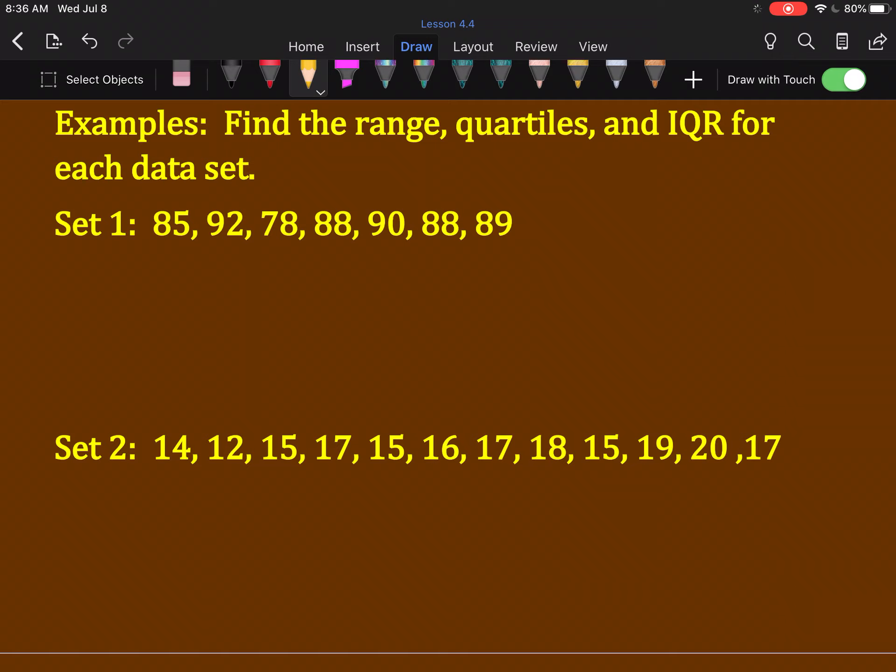So, let's see. Smallest number here looks like 78. Then I've got the 85. Then I've got two 88s. An 89, 90, and a 92.